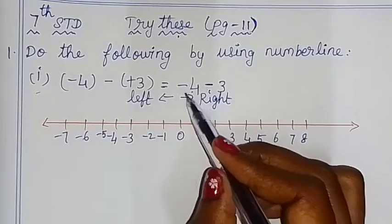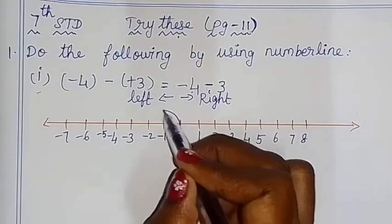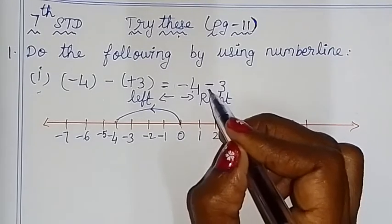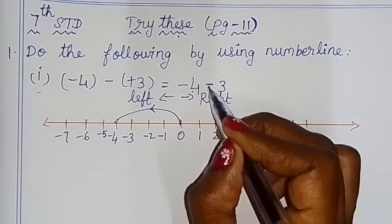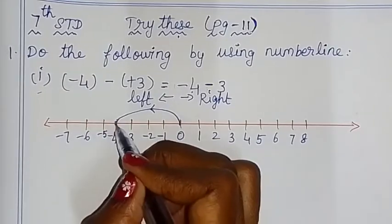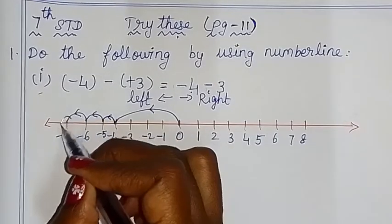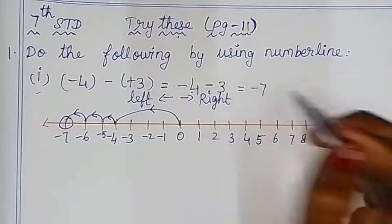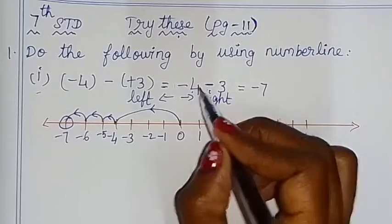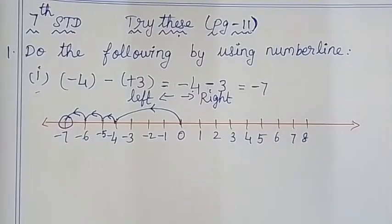Now solve on the number line. First: start at 0, move minus 4. Then from minus 4, count 3 more to the left — we end at minus 7. So this equals minus 7. Let's check: same symbol, minus, add 4 plus 3 is 7 — minus 7 is the correct answer.